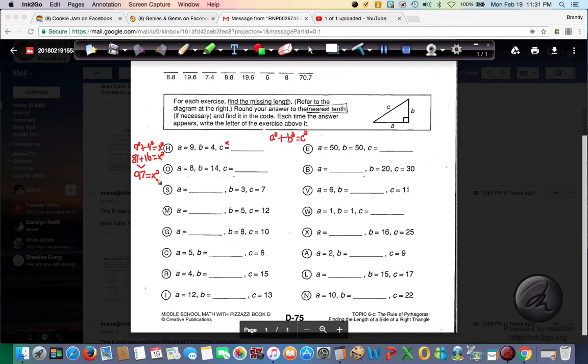So we have 97 equals X squared. Now to get rid of a square, remember, you must do the square root. That's above the nine key. The square root undoes the square to get X by itself. We don't want to know, technically, we don't want to know what C squared is. We don't want to know that. We want to know just this side length, just this part of it. So we're going to do square root. Cancel those out.